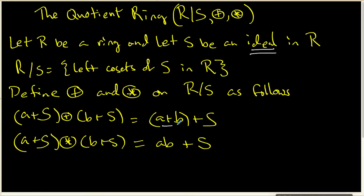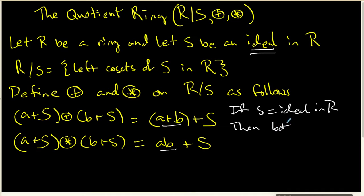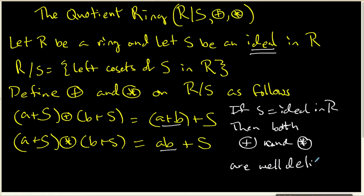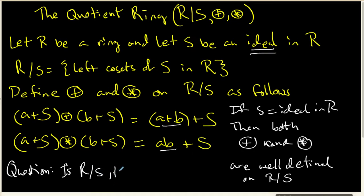For the addition, we simply add the representatives. For the multiplication, we multiply the representatives. In the previous videos we showed that if S is an ideal inside R, then both this addition and this coset multiplication are well defined on R mod S. The question we now have is: is R mod S under this addition and coset multiplication a full-fledged ring?